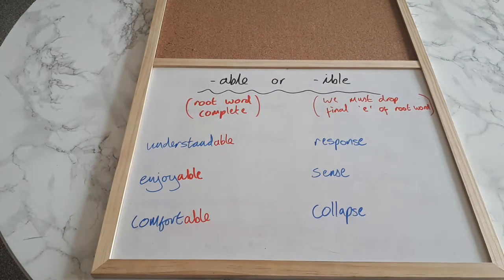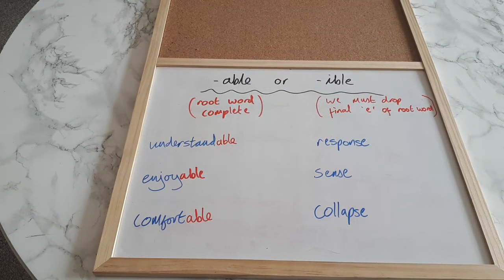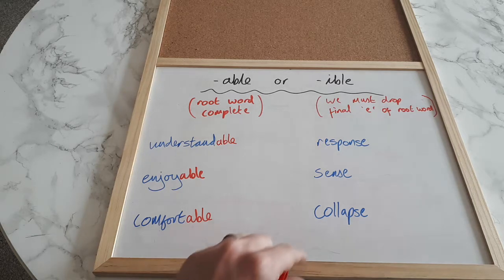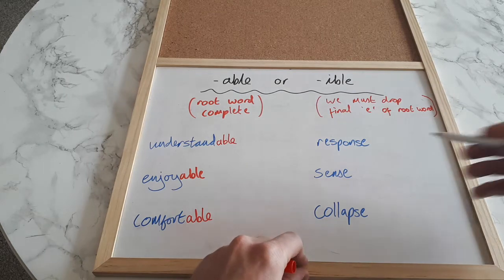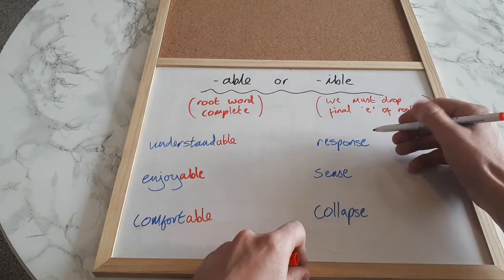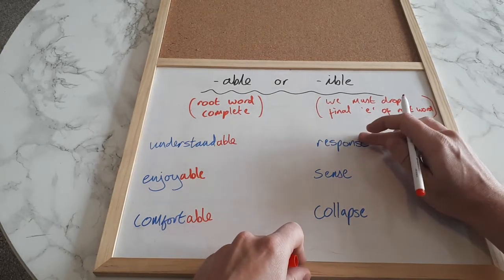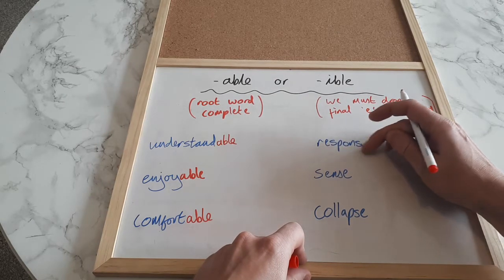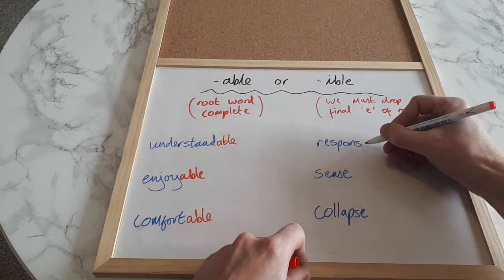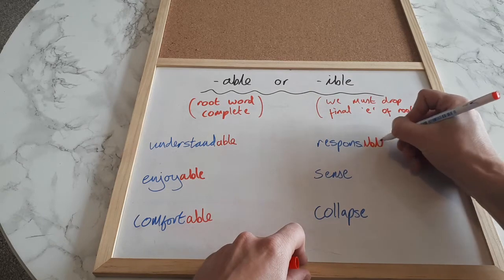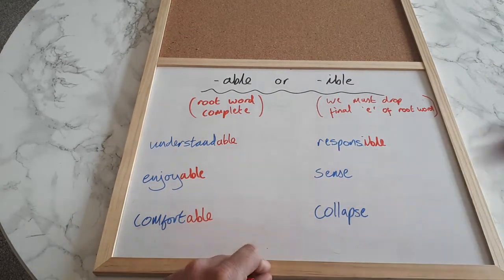And here's some examples. So I've got the word response. Now if response is to become an adjective, the adjective of response is responsible. If someone is responsible then they are sensible and they are the person whose job it is to do something perhaps. So as I said here we must drop the final e of the root word. So responsible, we don't just plonk -ible on the end. We have to remove that final e like so and then we can add our -ible ending. So now we have responsible.